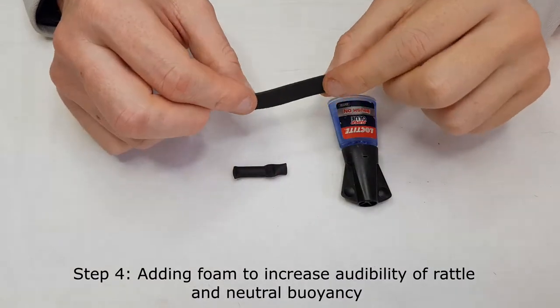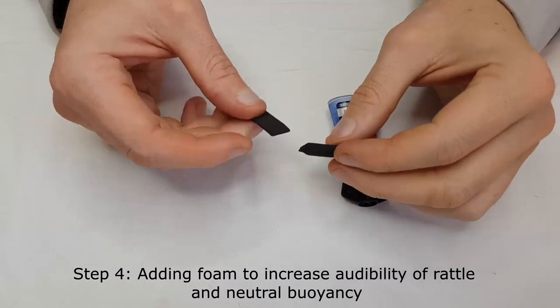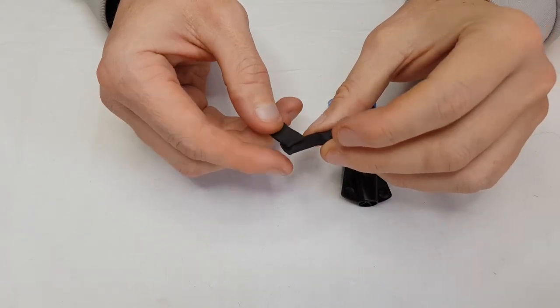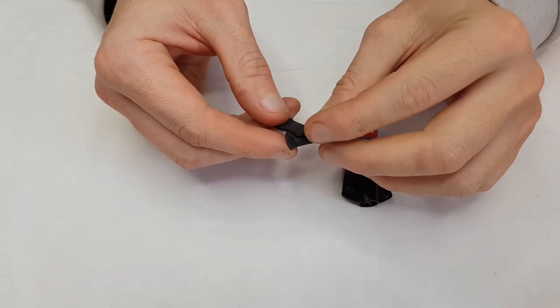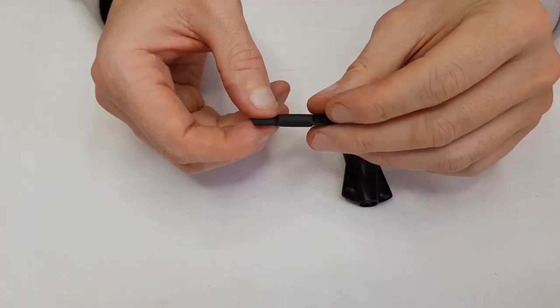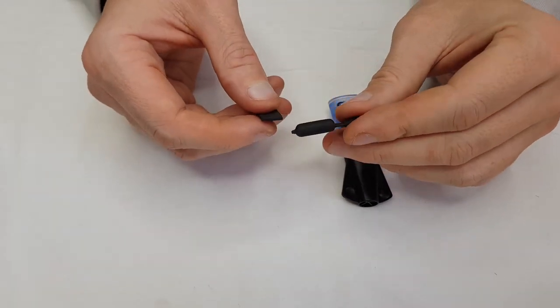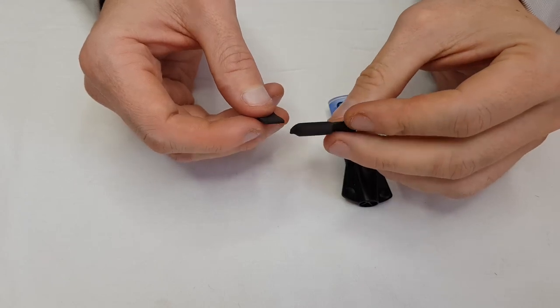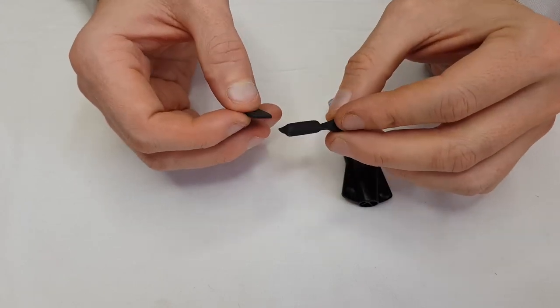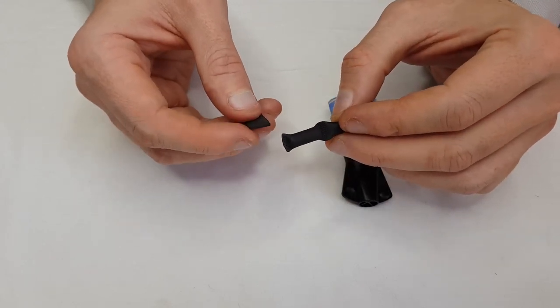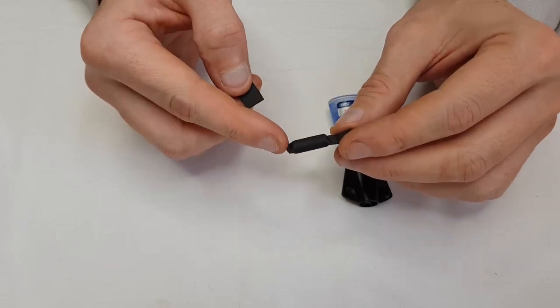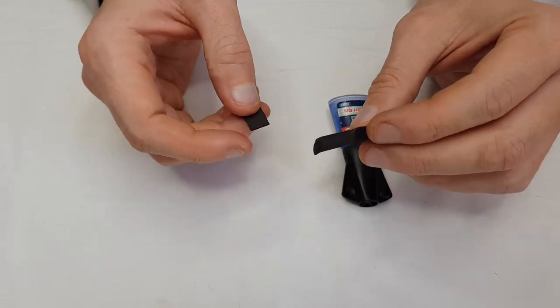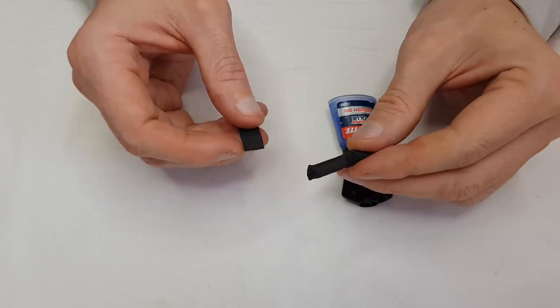I'm now adding foam which is cut approximately half the length of the rattle and I'm going to apply it to one side of the rattle only. What this will do is increase the audibility of the rattle in addition to adding some much needed neutral buoyancy to the fly so that the weight of this particular rattle doesn't offset or keel the fly unnaturally in the water.